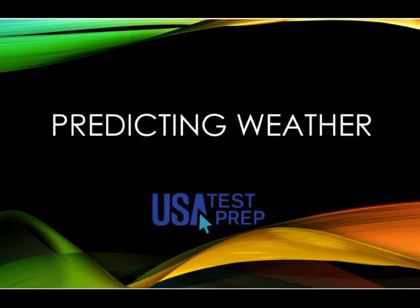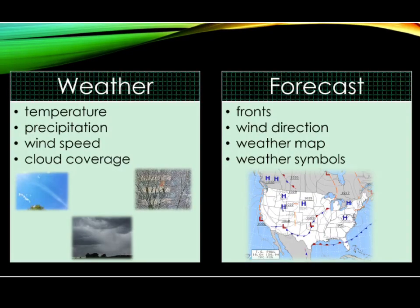This lesson is about predicting weather. Weather can change daily, but predictions about these changes can be made based on measurable factors like temperature and wind direction. Meteorologists are able to predict weather based on recorded measurements. Weather predictions based on these measurements are called forecasts.